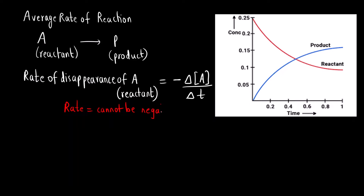If you look at this graph, the red curve shows the concentration of reactant — this is a graph of concentration versus time. As time passes, the concentration of reactant is decreasing. So if you calculate the change, that is final concentration minus initial concentration, you will find that the final concentration is lower because the reactant is getting used up. The final value is lower and the initial value is higher, so overall this value will be negative — but rate cannot be negative.